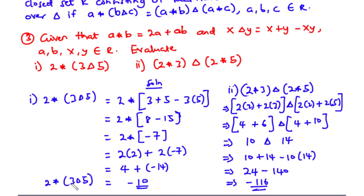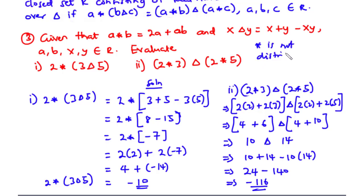So we have 2 star (3 delta 5) equal to negative 10, and (2 star 3) delta (2 star 5) equal to negative 116. Since 2 star (3 delta 5) is not equal to (2 star 3) delta (2 star 5), it follows that star is not distributive over delta.